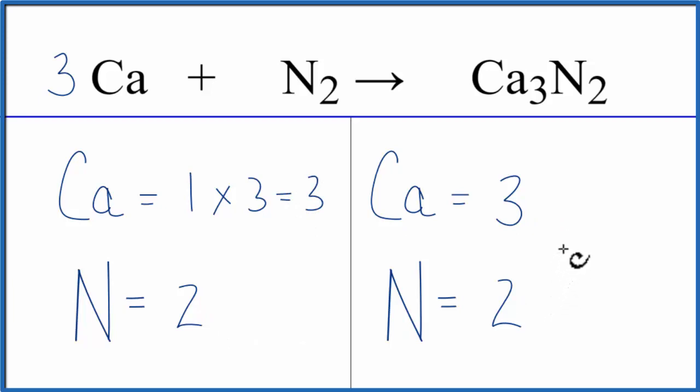This is Dr. B with the balanced equation for Ca plus N2 yield Ca3N2. That's calcium and nitrogen gas yields calcium nitride. Thanks for watching.